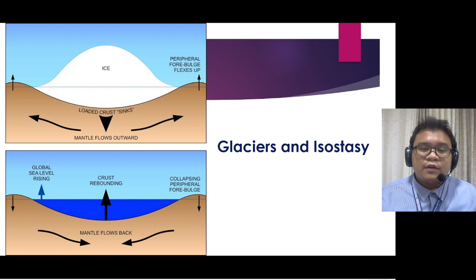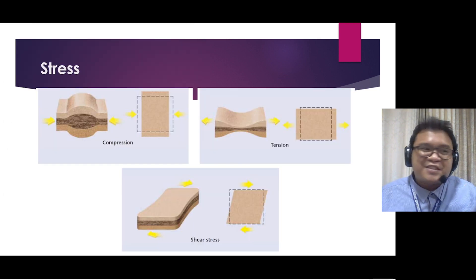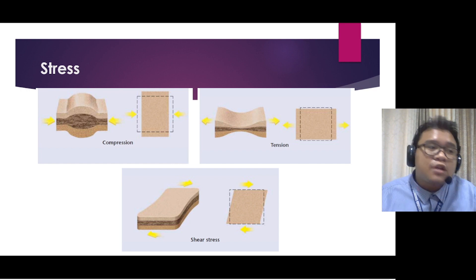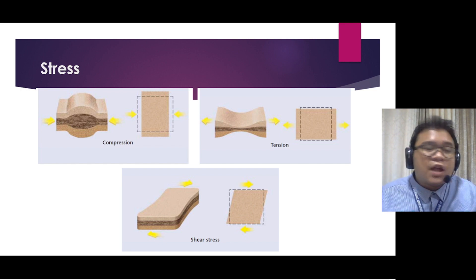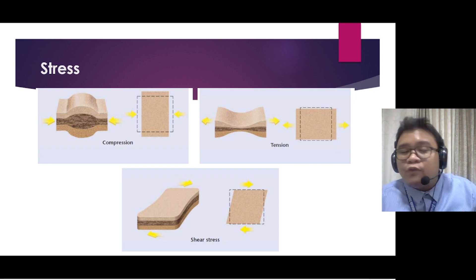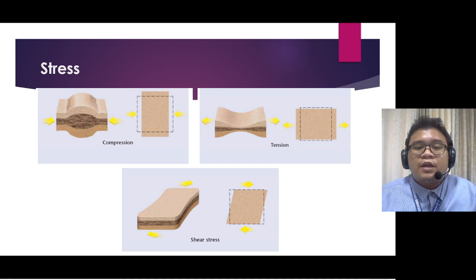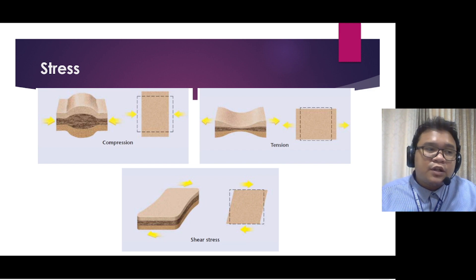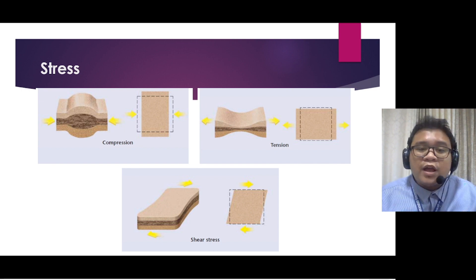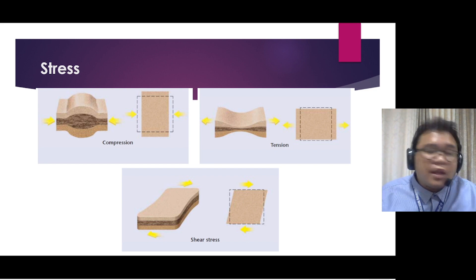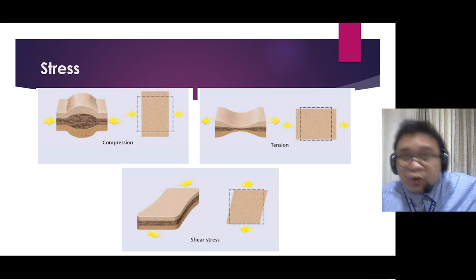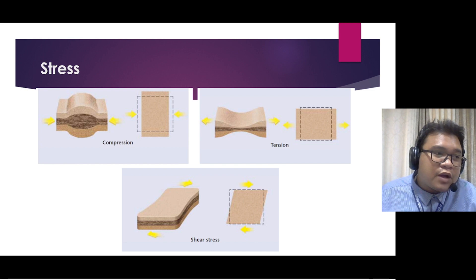This deformation is very important because as it happens, our earth's crust also experiences what we call as stress. As the earth's plates move, the rock in the crust is either squeezed, stretched, or twisted in the process. These actions exert force on the rock, and when the amount of force exerted on the rocks is too much for them to handle, stress is experienced which causes the deformation of these rocks. During isostatic adjustments, these forces are continuously experienced — as the lithosphere sinks, the rock in the crust is squeezed; as the lithospheric plates rise, the rock in the crust is stretched.